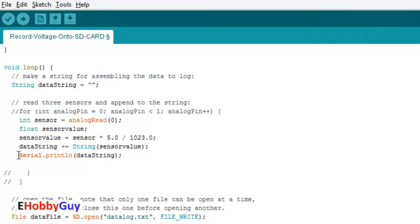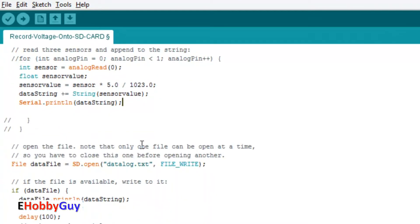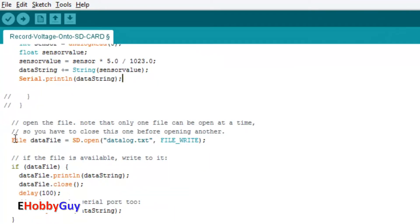I'm saying serial print line in the serial window just to see our progress as I vary the voltage. Now we open the data file on the SD card, I created a data log dot text file. Here is a simple if statement: if the file exists, print the data string to the file and then close. You do not save the information until you get to the close statement. I put 100 milliseconds delay to give it time to write, then we loop back and do the same thing again every 100 milliseconds or 10 times a second.